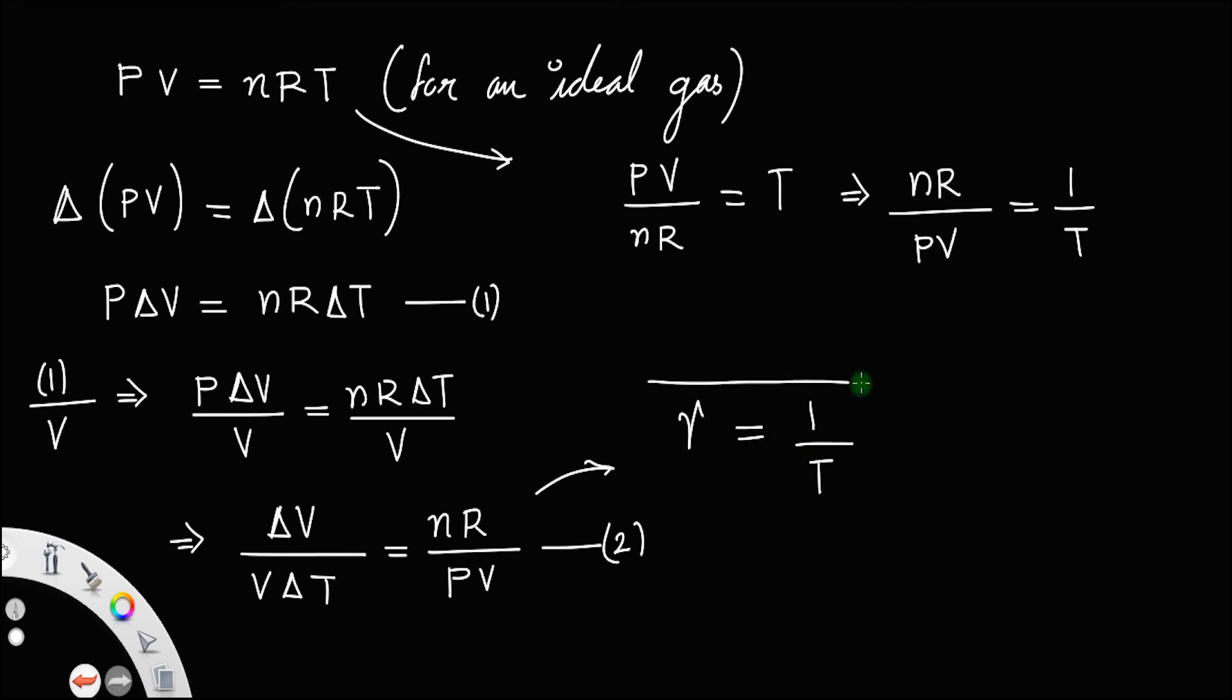So that is the relation between coefficient of cubical expansion and absolute temperature at constant pressure. The coefficient of cubical expansion is the reciprocal of the absolute temperature. You can write T gamma equal to 1, gamma T is always 1.